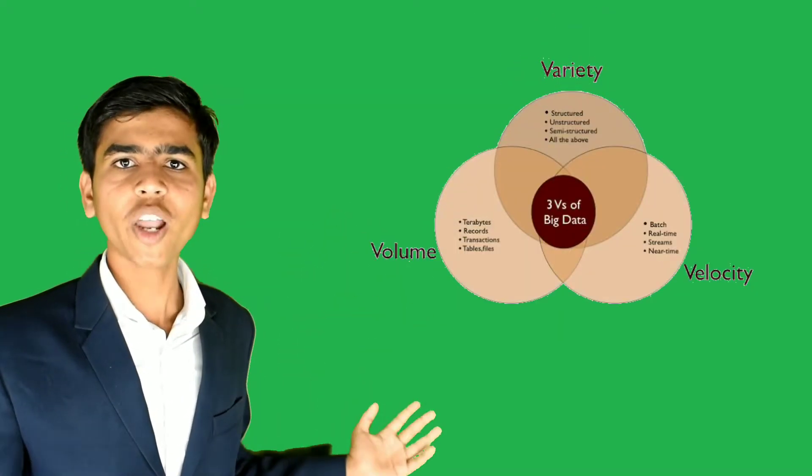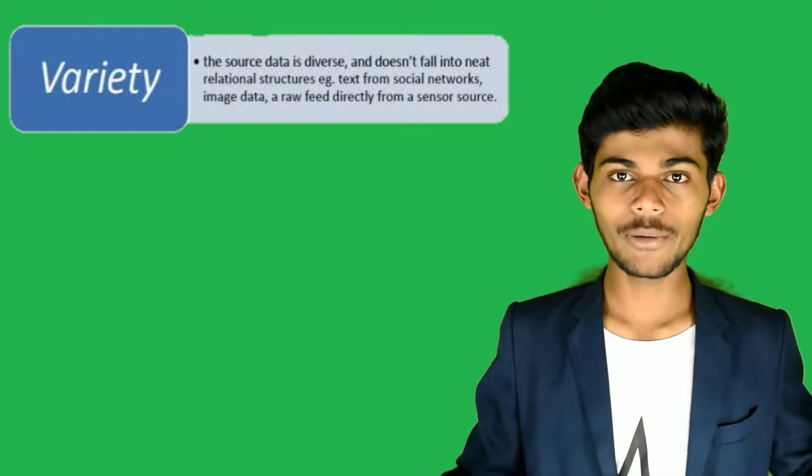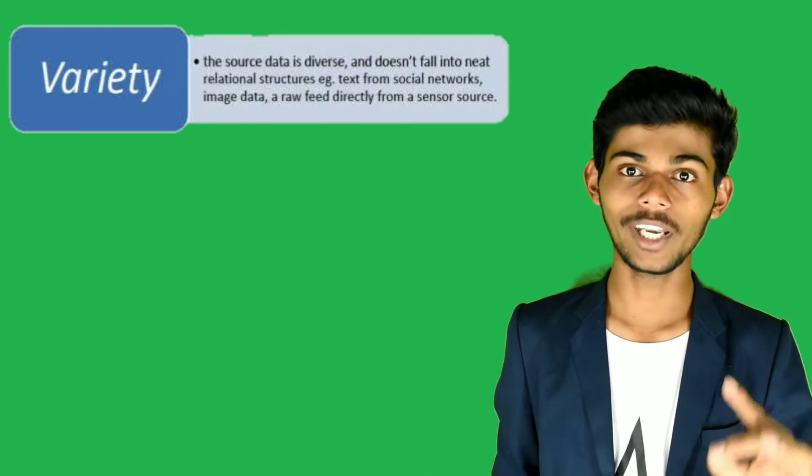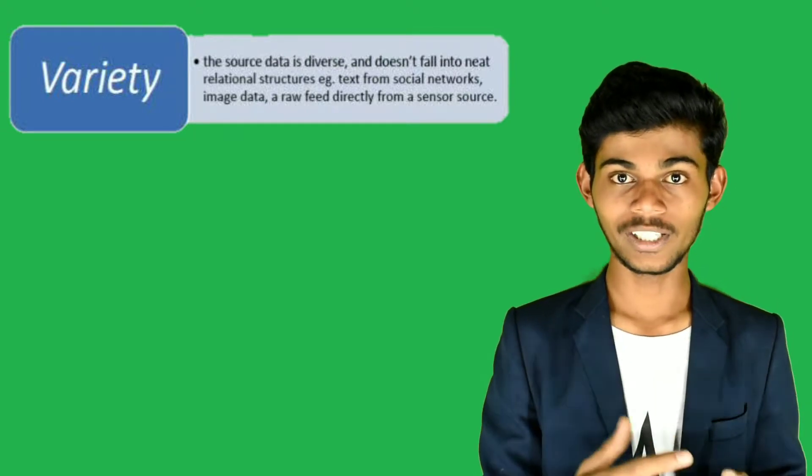Characteristics of big data: variety, velocity, and volume. Data variety means the source data is diverse, and doesn't fall into neat relational structures. It can be in any varieties like MP3, MP4, HD, Full HD, like any type of varieties data stored in that big data.